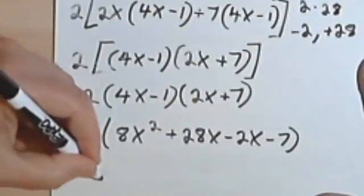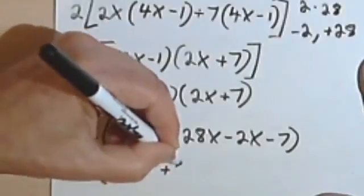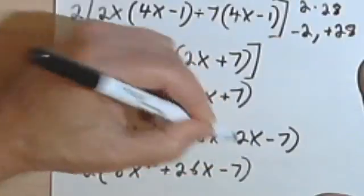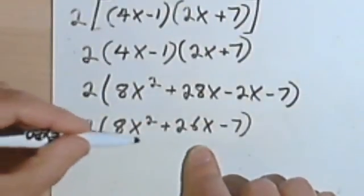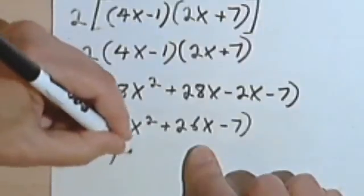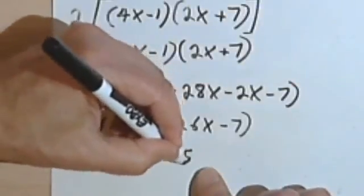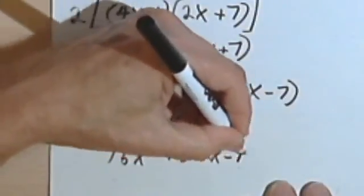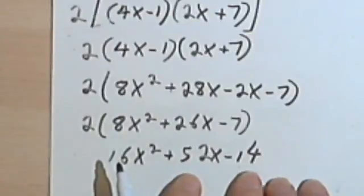Combining the middle terms, I'll get 2 times 8x squared plus 26x minus 7. And I want to distribute this 2 across this polynomial. I'll get 16x squared plus 52x, 2 times negative 7 is negative 14. 16x squared plus 52x minus 14.